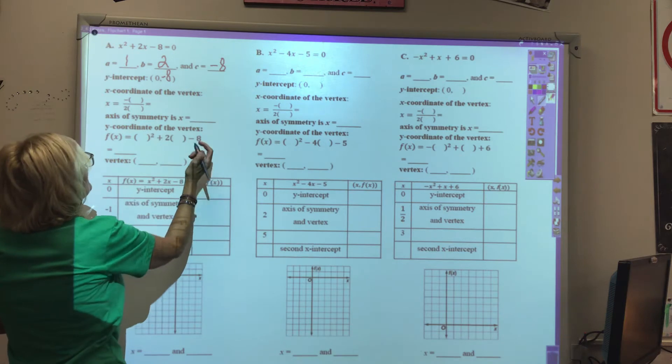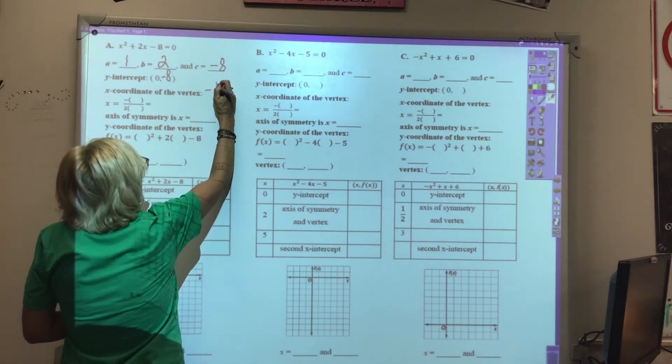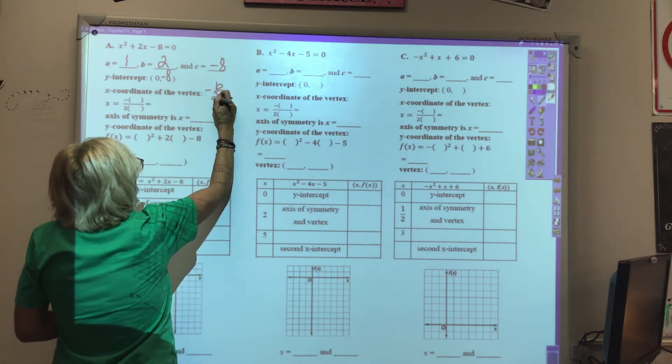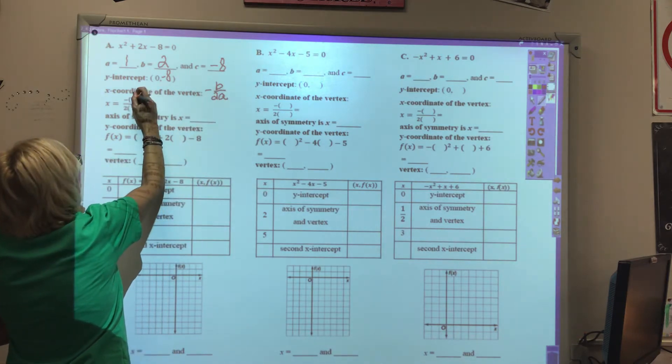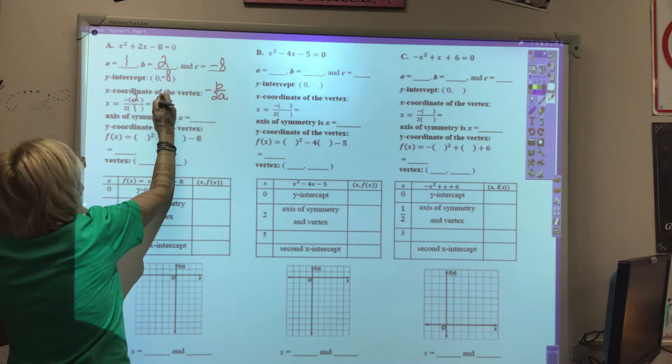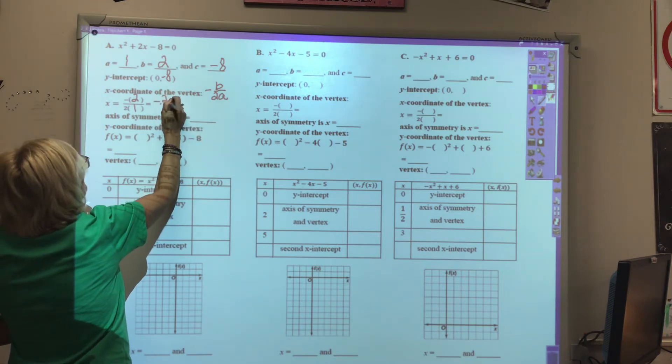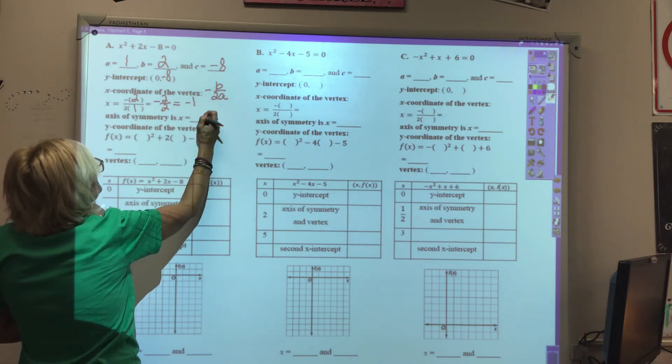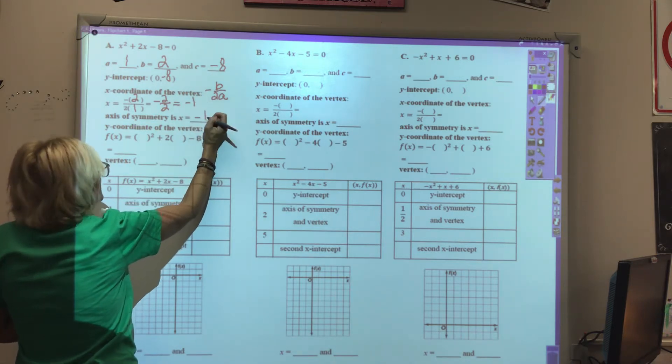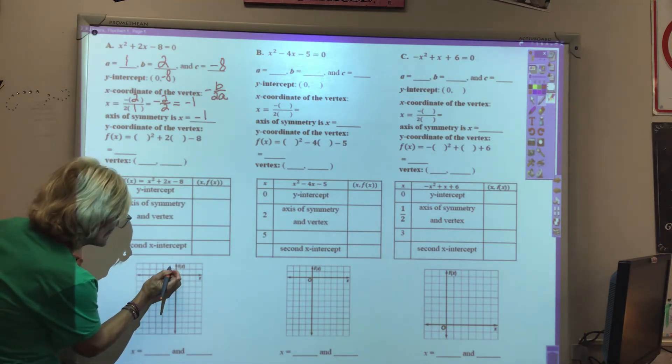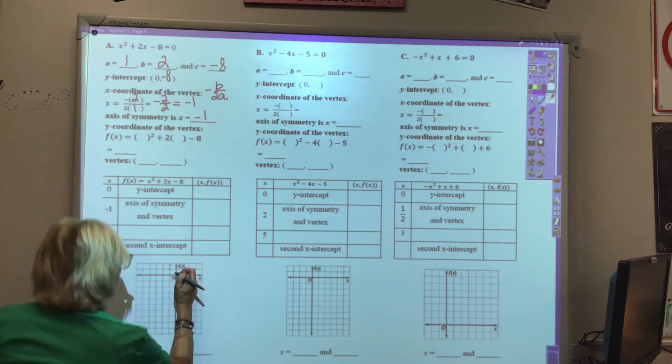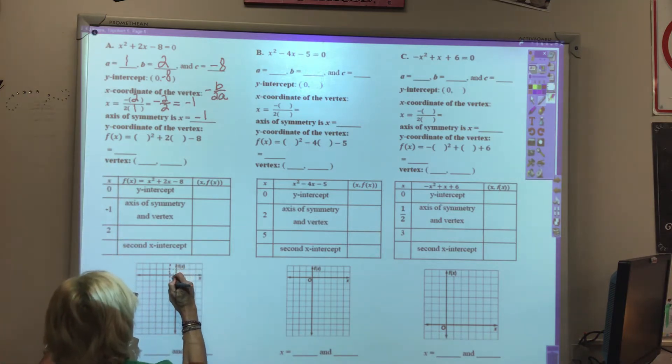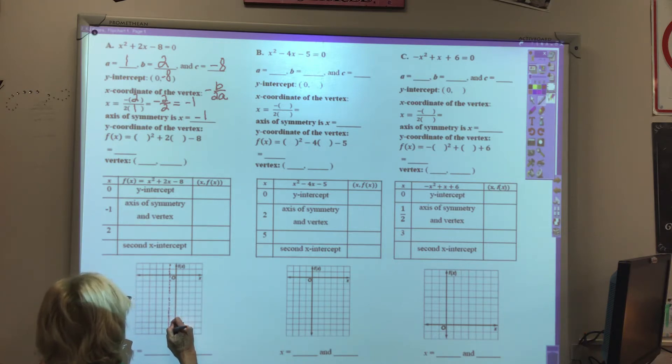The x-coordinate of the vertex, again that formula is the opposite of b over 2a, so the opposite of 2 over 2 times 1 would be negative 2 over 2, which is negative 1. The axis of symmetry is x equals negative 1. I'm going to go ahead and put that on here as I go.